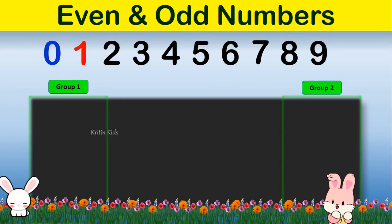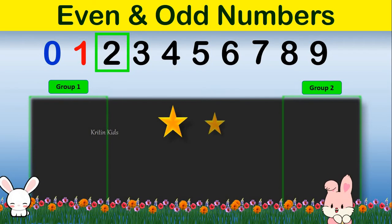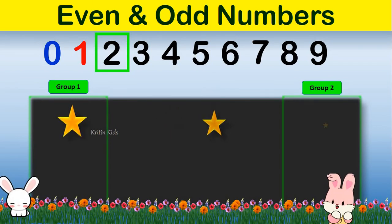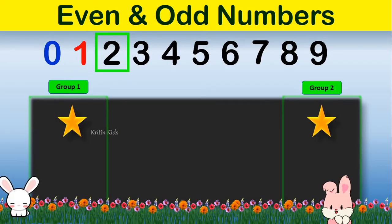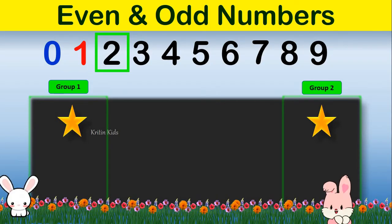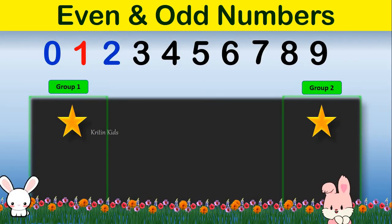Now let's go for the next number, that is number 2. If you divide them between 2 groups, you can see both groups have 1 item each, meaning both groups have equal number of items. Therefore number 2 is an even number.